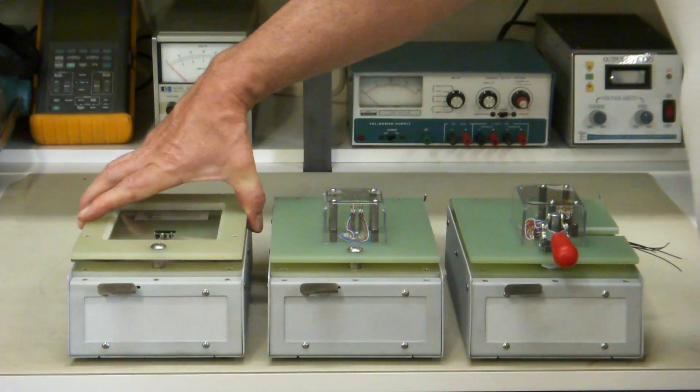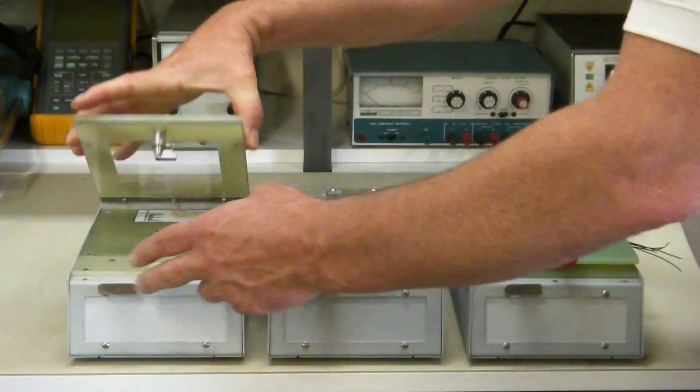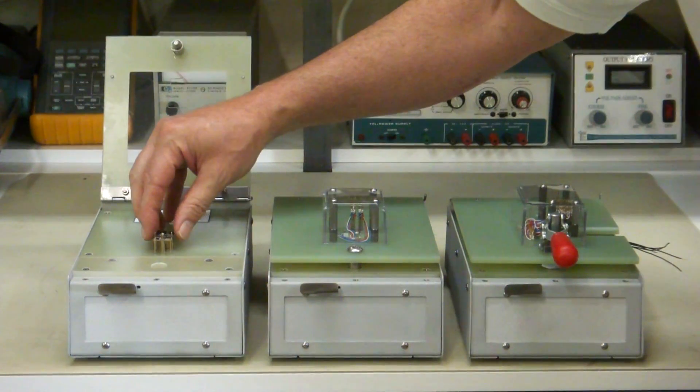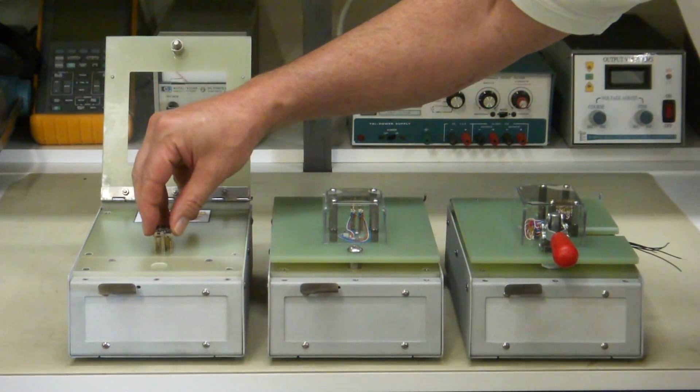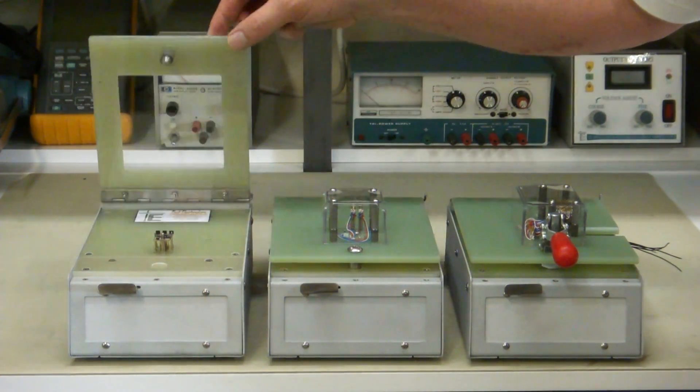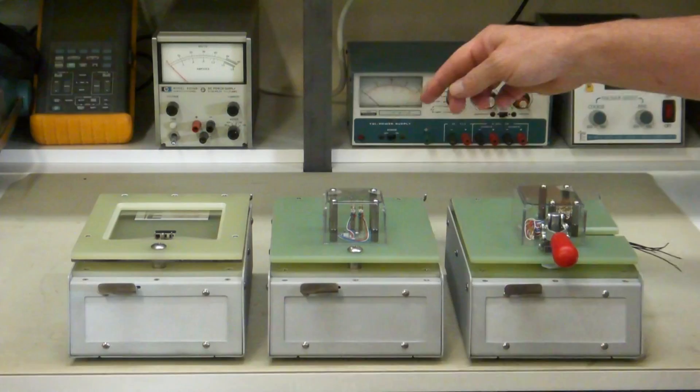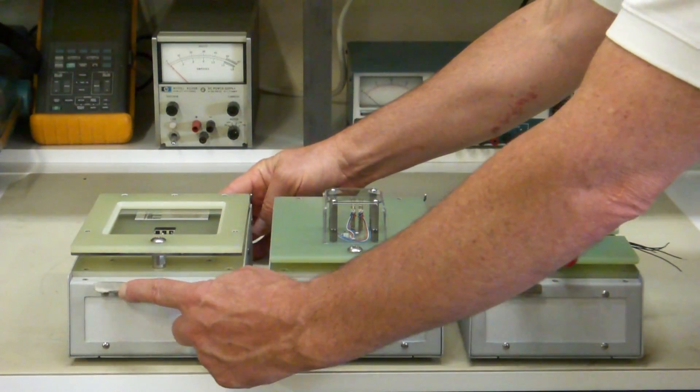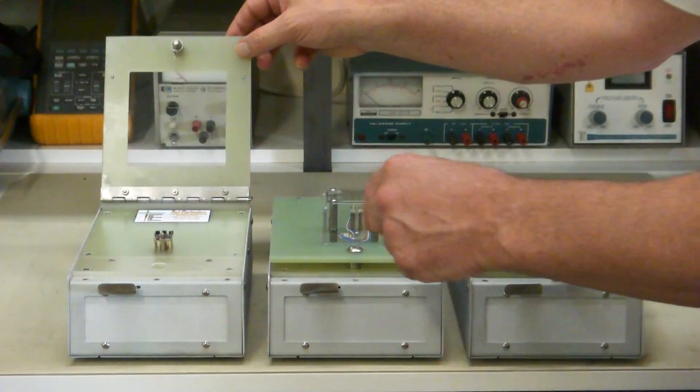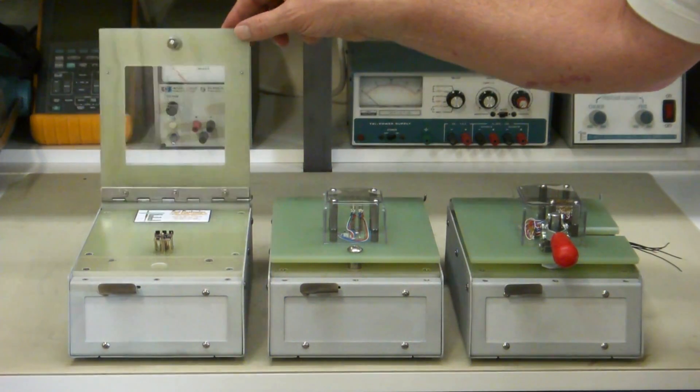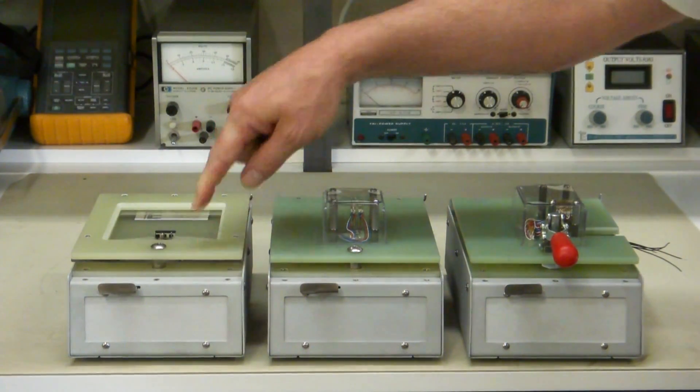Now this prober here is a single sided prober and it just probes a board from one side. You just place the board in here, close the lid and it latches down. To release it you press this latch, it opens up and then you can remove the board, put a new board in and repeat your test over again.